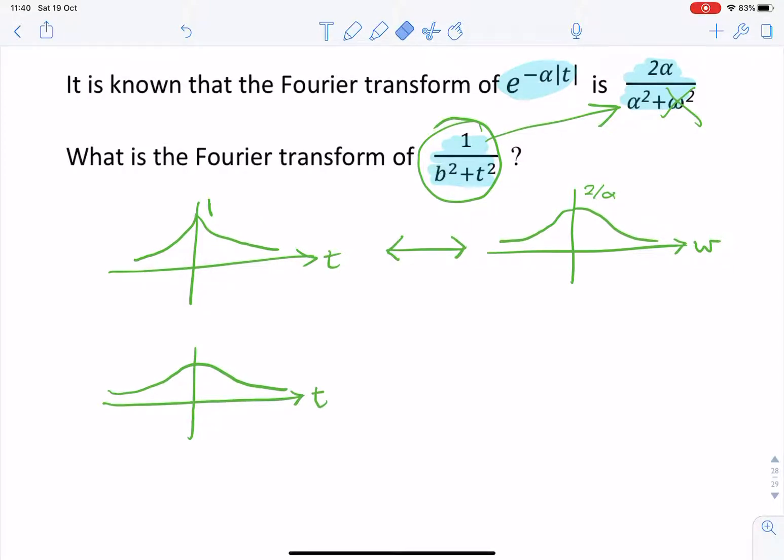So that would be 1 over b² plus t², the maximum value. And the question is, what's the Fourier transform of that?